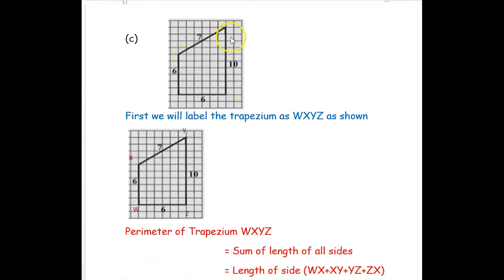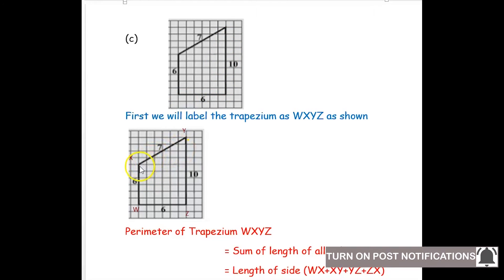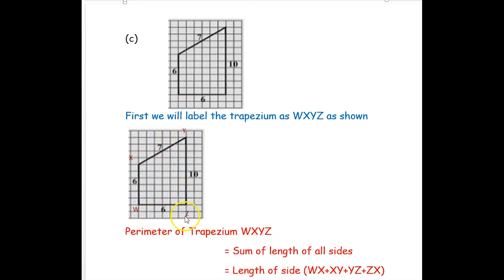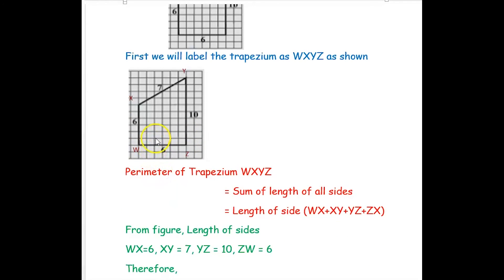Now we look at the next given figure, the third trapezium. We label its vertices as W, X, Y, Z — so WXYZ. The perimeter of trapezium WXYZ is the sum of all sides: WX plus XY plus YZ plus ZW. From the figure, WX is 6, XY is 7, YZ is 10, and ZW is 6.